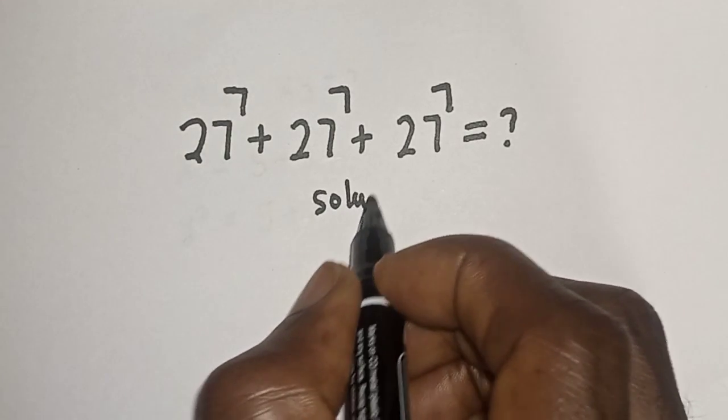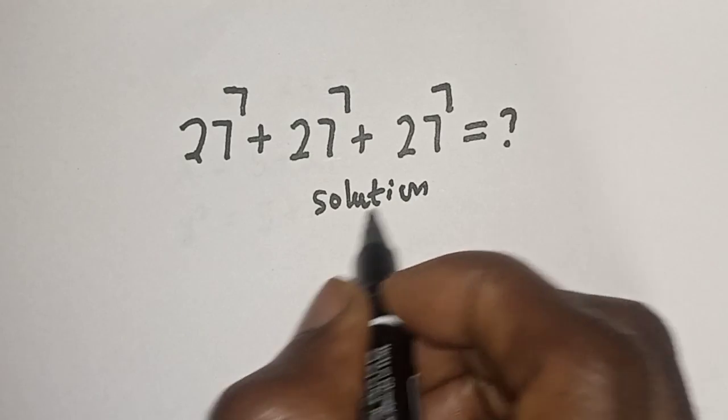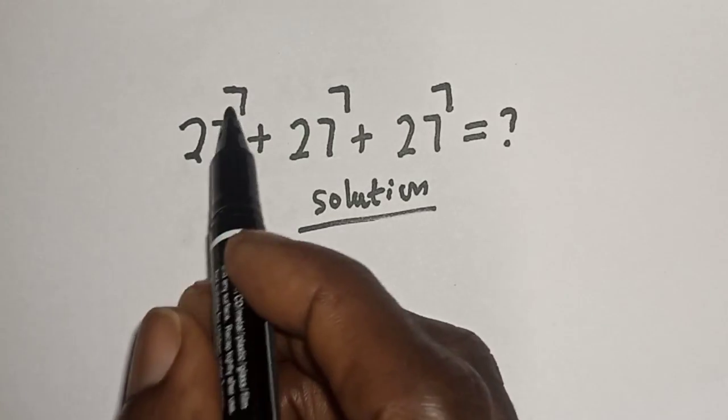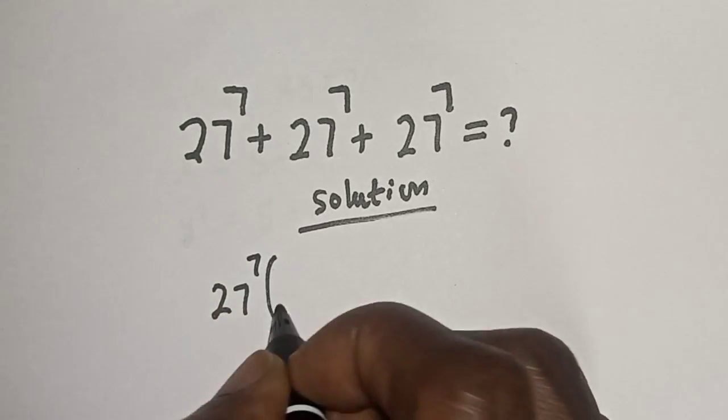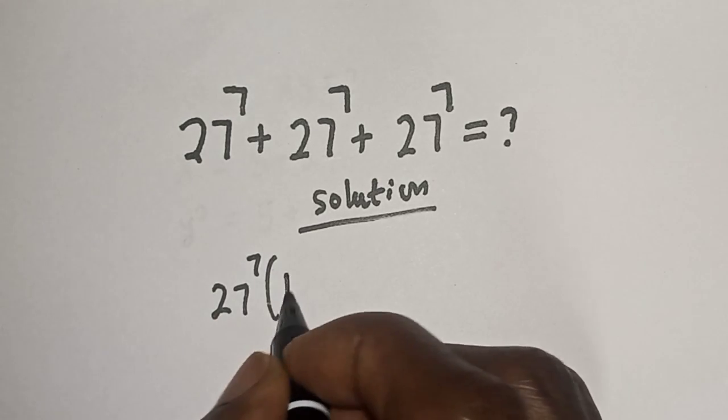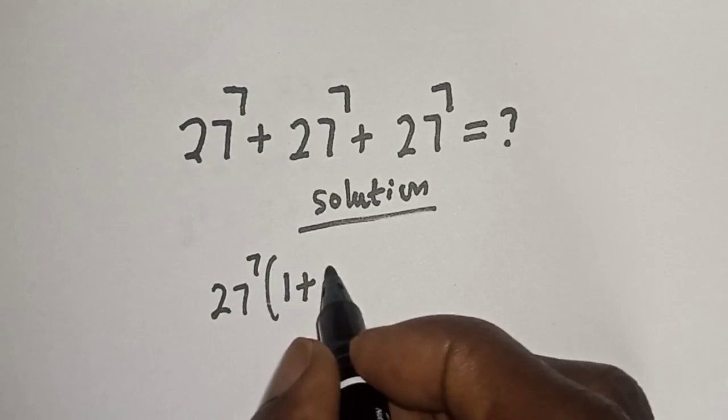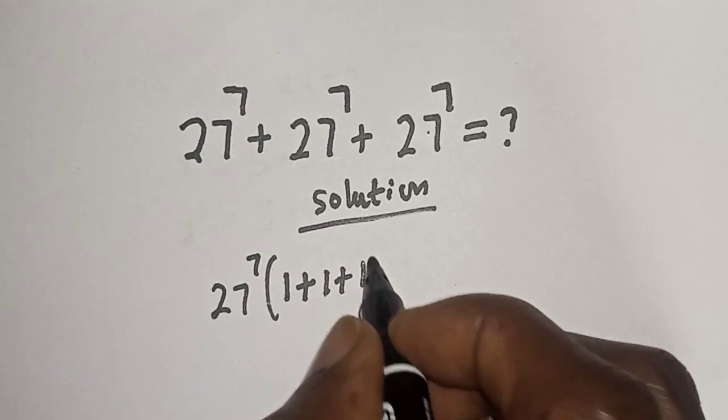Solution. Then, 27 raised to power 7 is common. Let's bring it out. We have 27 raised to power 7 bracket, this divided by this 1 plus this divided by this 1 plus this divided by this 1.